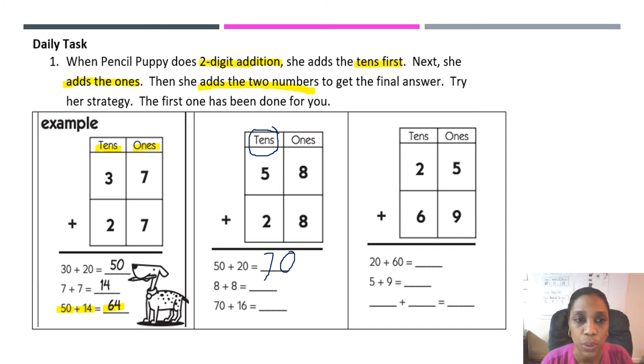Next, we're going to do the second step. We're going to add the ones. So 8 ones plus 8 ones is 16. And last, we're going to take the sum of the first two problems and add them together. So we have 70 plus 16, and that will give us 86.